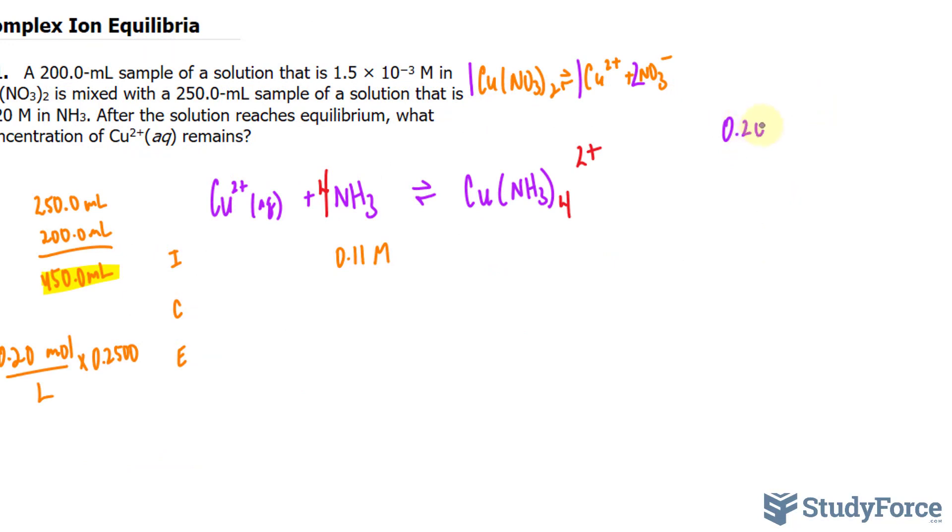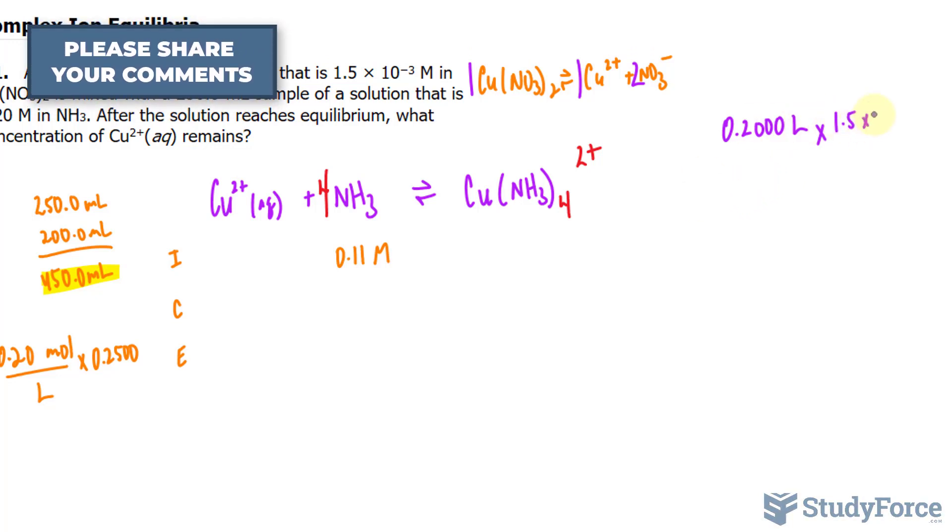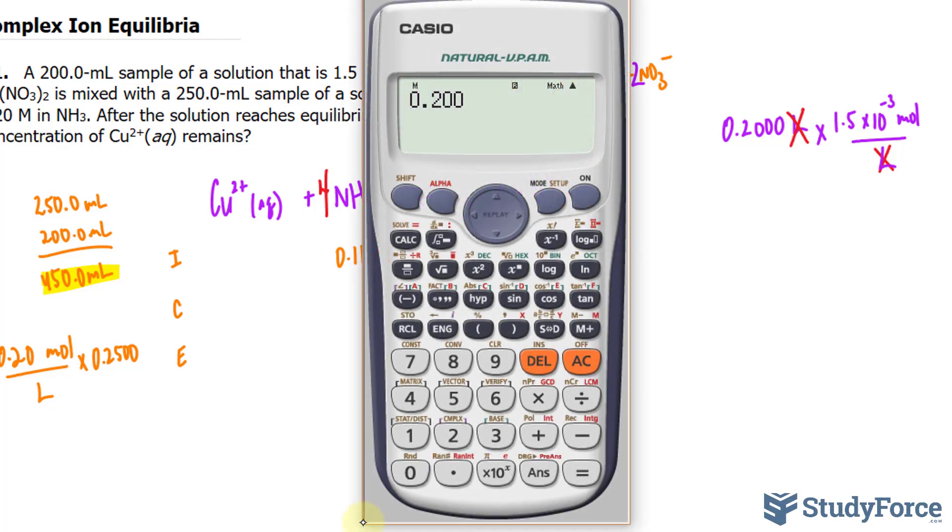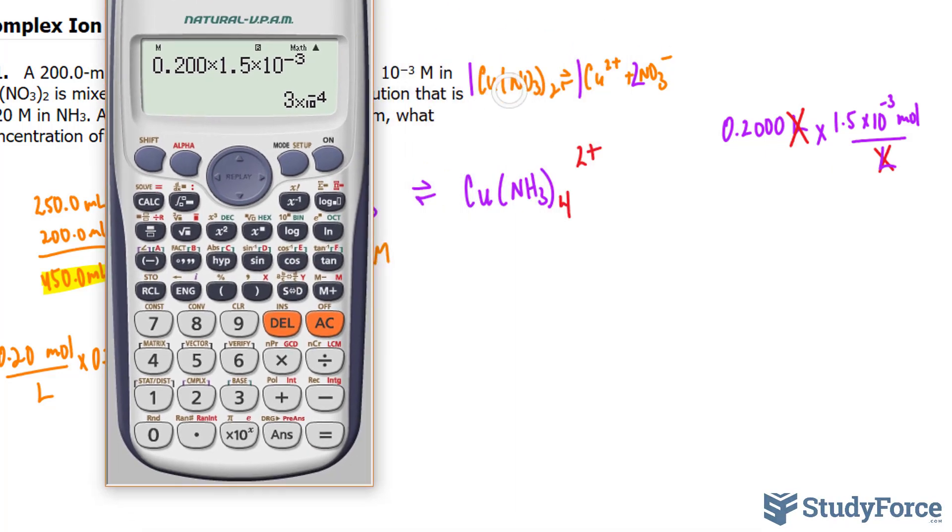So 0.2000, that's the amount of volume in that first solution. Multiply it to its concentration of 1.5 times 10 to the power of negative 3 moles per liter. This and this will cancel out, and we'll get the amount of moles of Cu(NO3)2. So multiply that by 1.5 times 10 raised to the power of negative 3. That's the amount of moles of Cu(NO3)2.